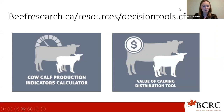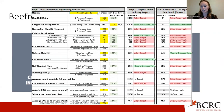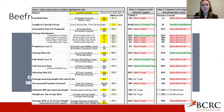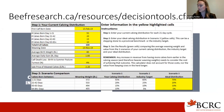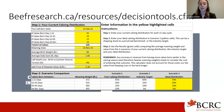On our website we have decision-making tools. We have our cow-calf production indicators calculator, which allows you to enter your own production numbers and compare them with the industry target as well as your regional benchmark. These numbers come from our most recent regional cow-calf surveys. The highlighted yellow fields are the information you will input, and then you can determine whether you meet or exceed the target, or are below target, on that particular parameter.